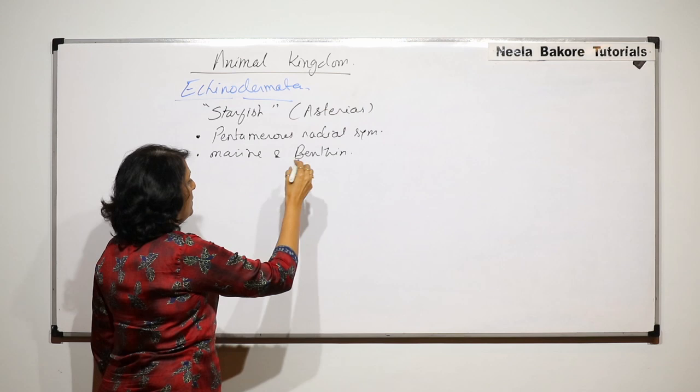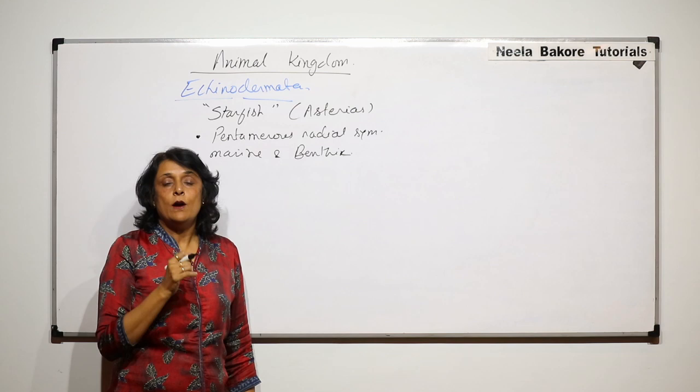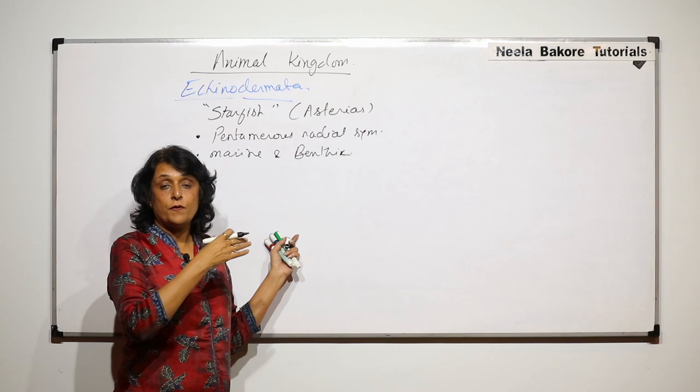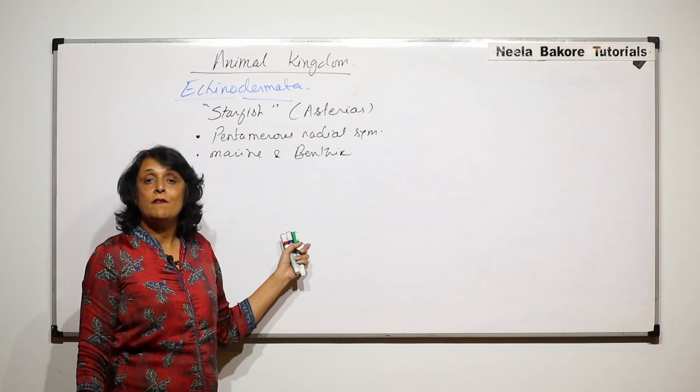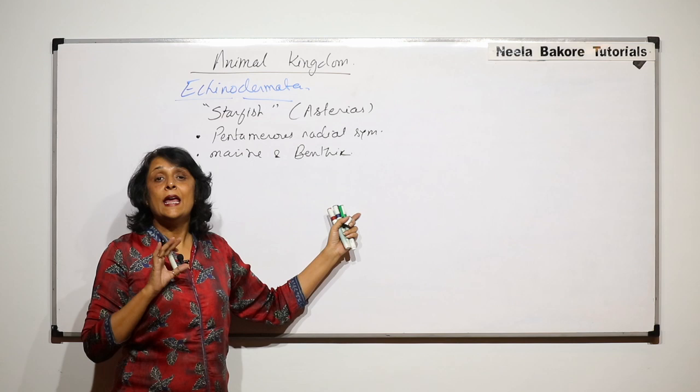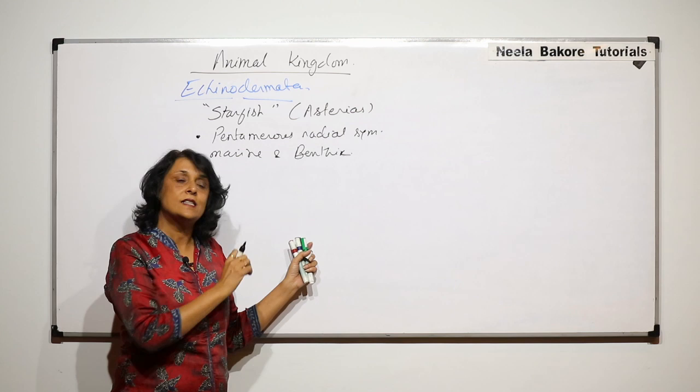That means they are found on the sea bed. The general characteristics of Echinoderms are common here also — they are triploblastic, they have coelom, and everything is at the organ system level, all very well developed. Here we are talking about some basic important and unique things to starfish or Echinoderms, especially like starfish.